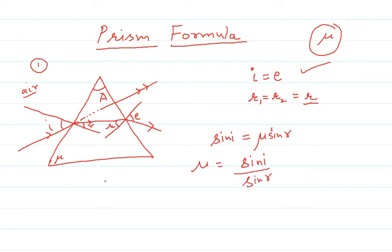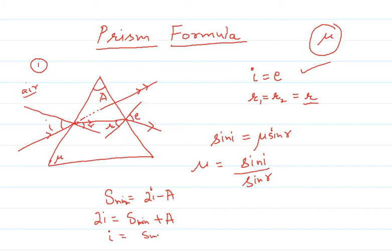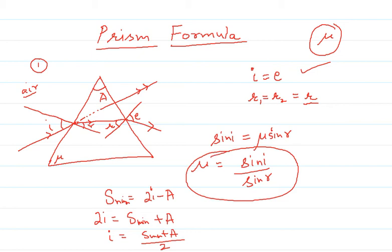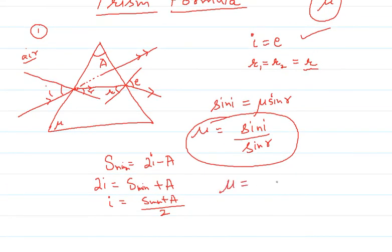We know that during minimum deviation, the expression for delta minimum is 2i minus the angle of prism A. From here, 2i equals delta minimum plus A, so i equals (delta minimum plus A) divided by 2. We substitute this into the prism formula: mu equals sin of (delta minimum plus A) divided by 2.